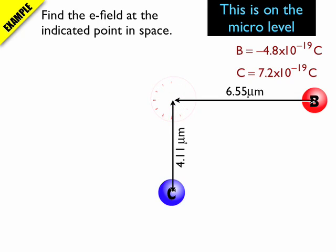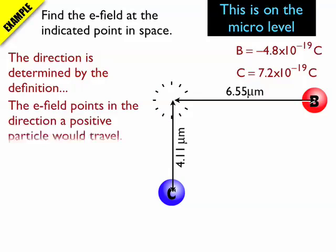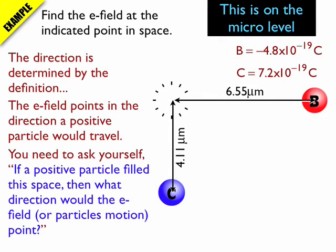So the direction is determined by the definition of an electric field. The electric field shows the path a positive particle would take if we put it in that point in space. So in this case, I can put my positive particle in that point in space, and I can see that due to the C particle, it's going to be repelled upwards.